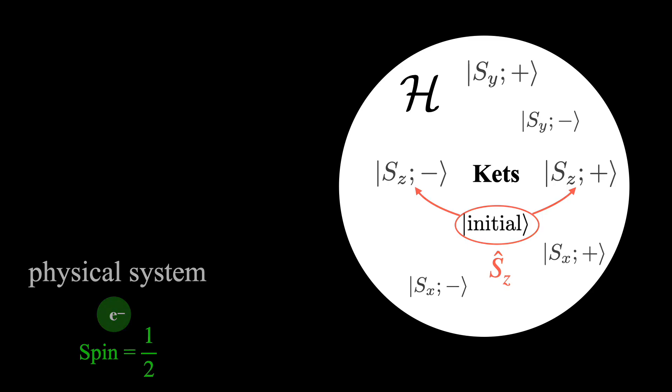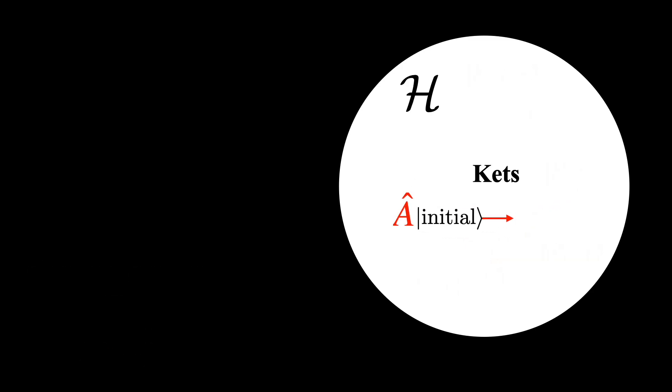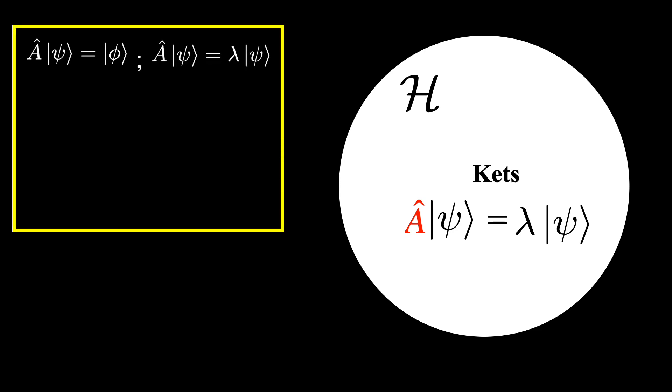In general, that is what every operator in quantum mechanics will do. And if the initial state is an eigenvector, then the final state will be the same state scaled by its eigenvalue. So to sum up this step, an operator will always act on a ket from the left side and produce another ket. And if the ket is an eigenvector, then it will satisfy this specific equation.